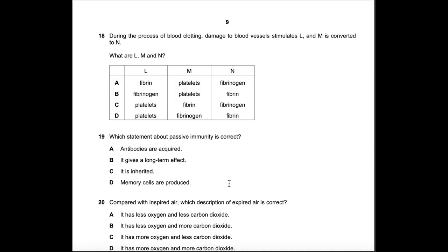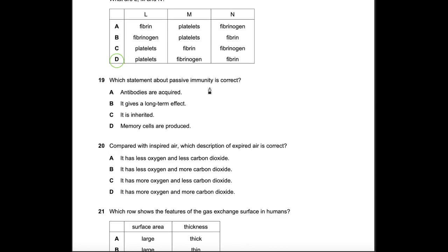Question 18: During blood clotting, damage to blood vessels stimulates L and M, which is converted to N. L is platelets — the cell responsible for initiating blood clotting — so we choose between C and D. M is fibrinogen, because soluble fibrinogen is converted into insoluble fibrin during clotting. Answer: D.